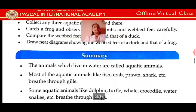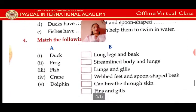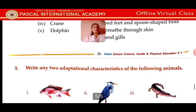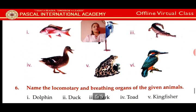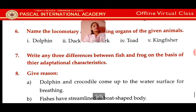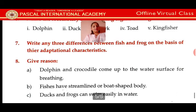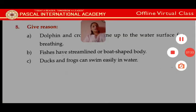Now here is an excellent exercise. Try true or false, fill in the blanks, and write additional characteristics of the following animals. Name the locomotory and breathing organs of the given animals, and find the difference between fish and frog on the basis of their adaptational characteristics. Thank you — do your exercise.